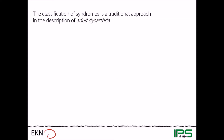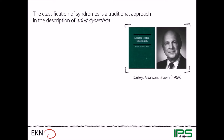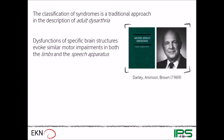The classification of syndromes is a traditional approach in the description of adult dysarthria. It builds on the seminal work by Frederick Daly and colleagues, and the basic assumption is that dysfunctions of specific brain structures evoke similar motor impairments in both the limbs and the speech apparatus. So for instance, lesions of the cerebellar circuit may result in ataxia in the upper limbs but also in a specific speech impairment, which would be classified as ataxic dysarthria accordingly.